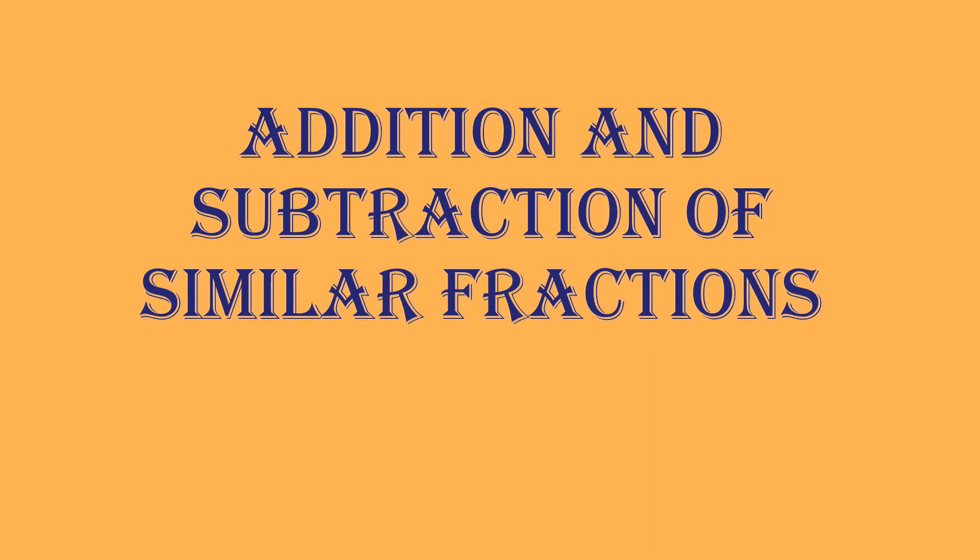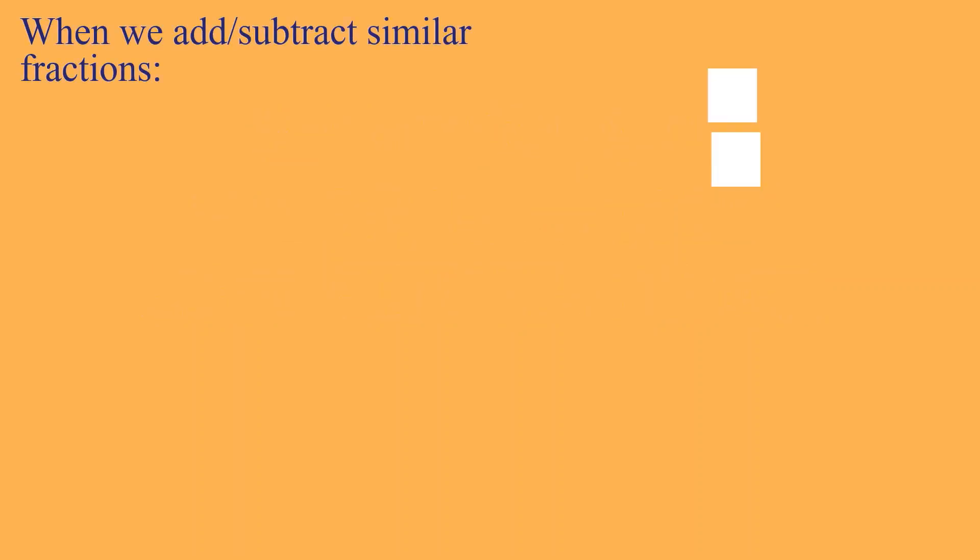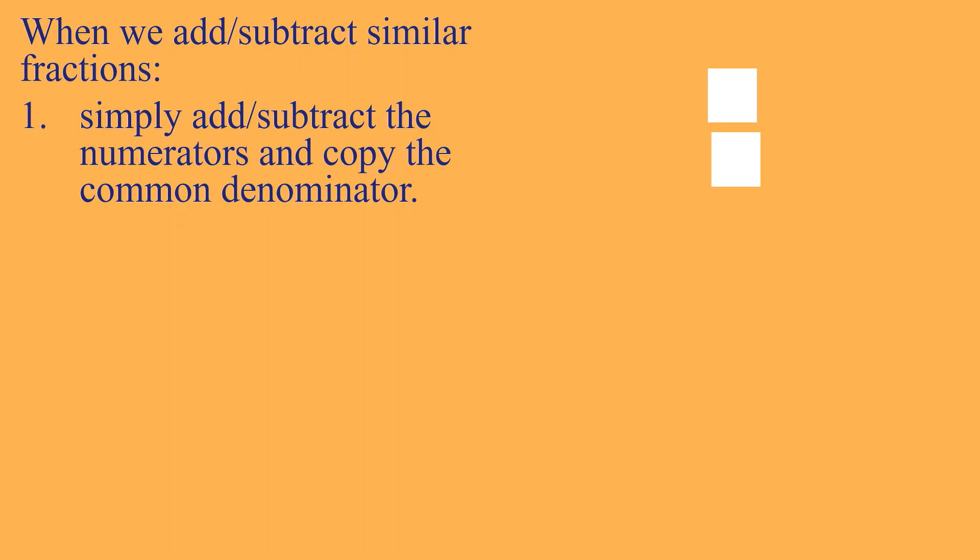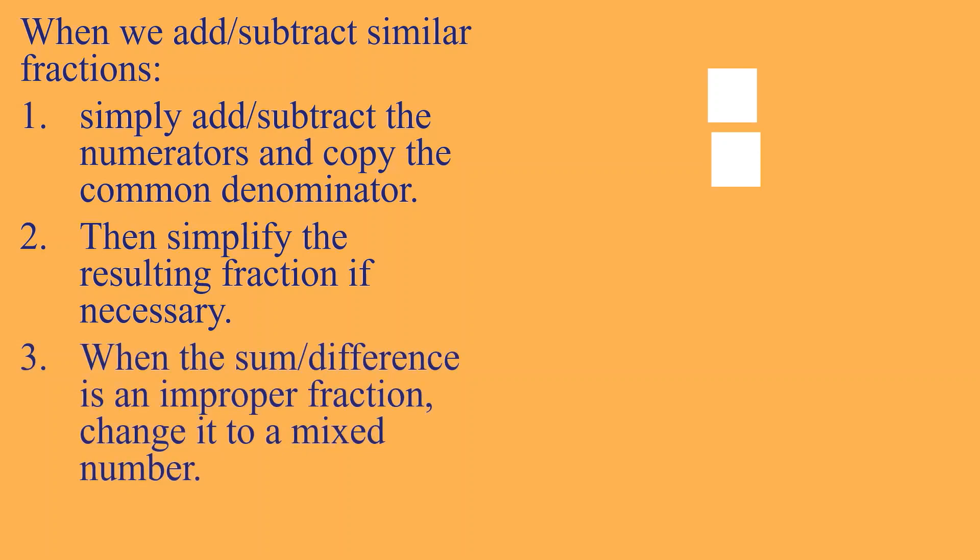Let us start with the first part of our lesson which is addition and subtraction of similar fractions. When we add or subtract similar fractions, these are the steps. First, we simply add or subtract the numerators and then copy the common denominator. Then, after that, simplify the resulting fraction if necessary. If it is not yet in its simplest form, we need to simplify. And then third, when the sum or difference is an improper fraction, change it to a mixed number. Kapag mas mataas yung numerator kaysa sa denominator, kailangan natin mag-change sa mixed number.